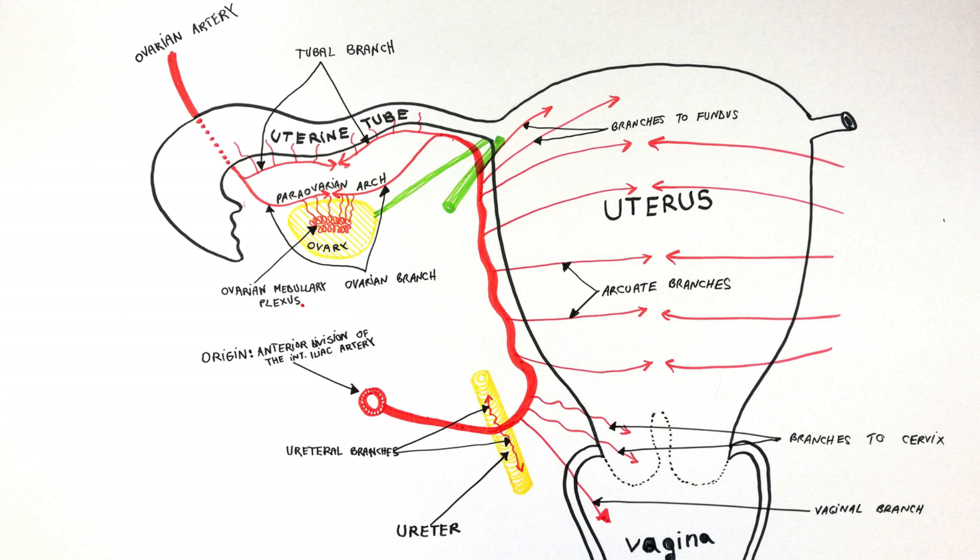Keep in mind that it supplies uterus, vagina, medial two-thirds of the uterine tube, ovary, ureter and structures within the broad ligament. The uterine artery enlarges significantly during pregnancy.